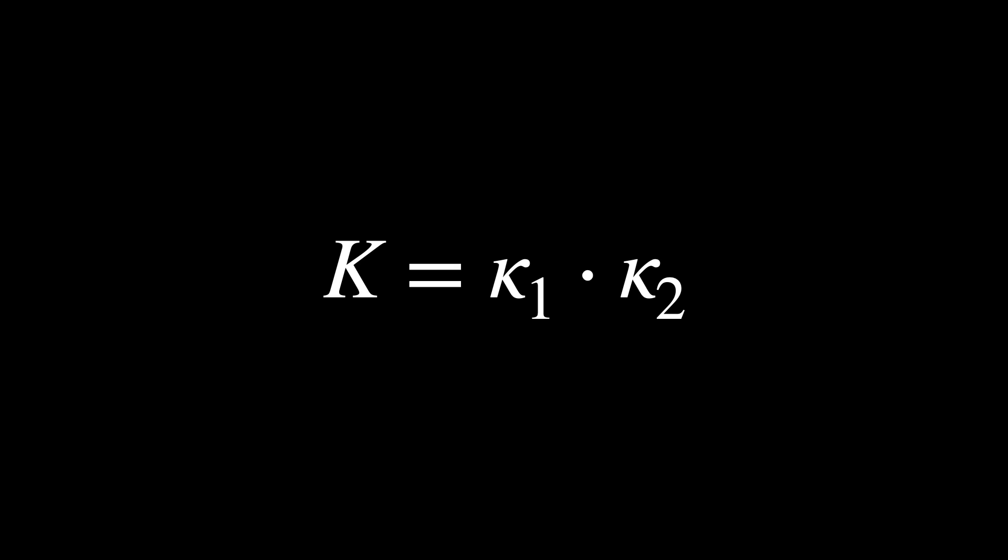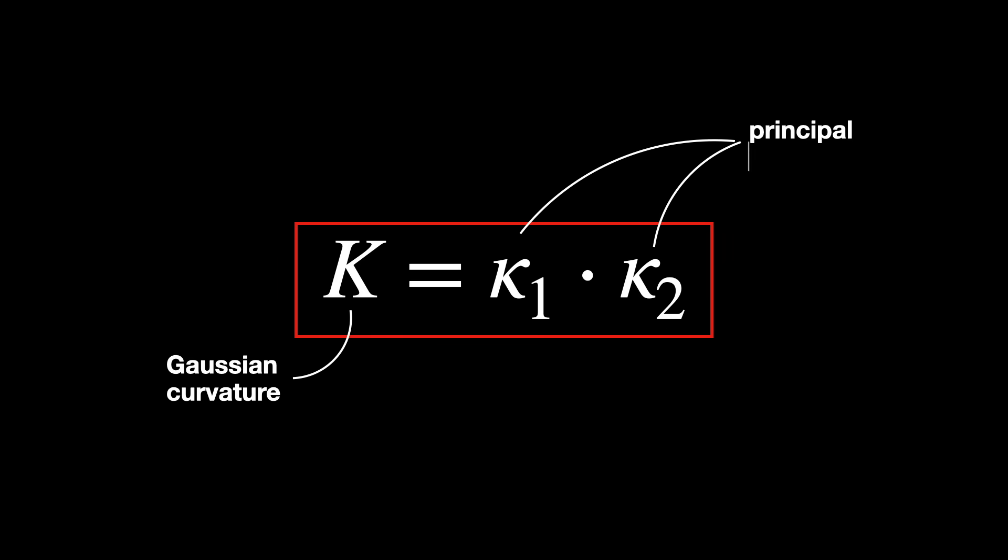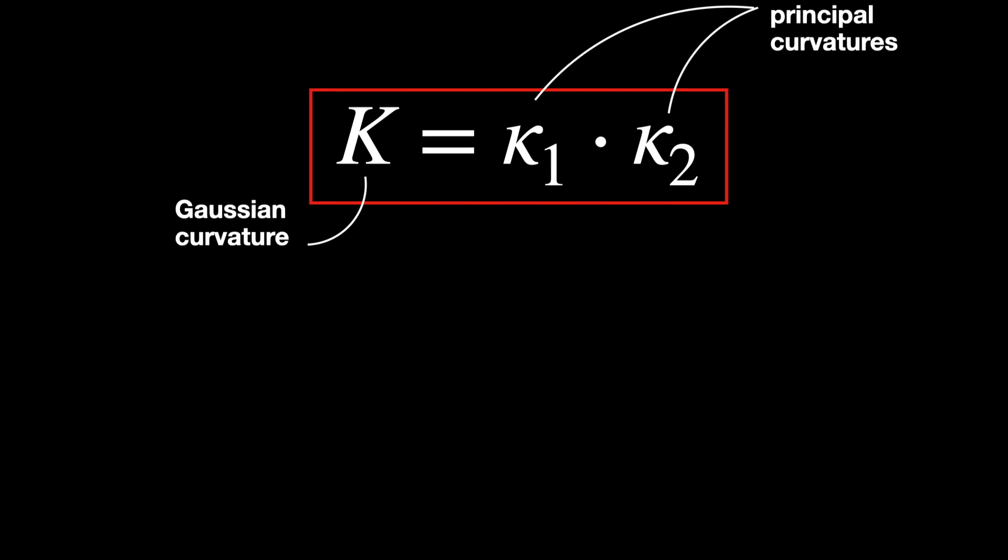Gaussian curvature is defined as the product of two principal curvatures, denoted with the Greek letter kappa. The principal curvatures can be positive, negative, or zero.